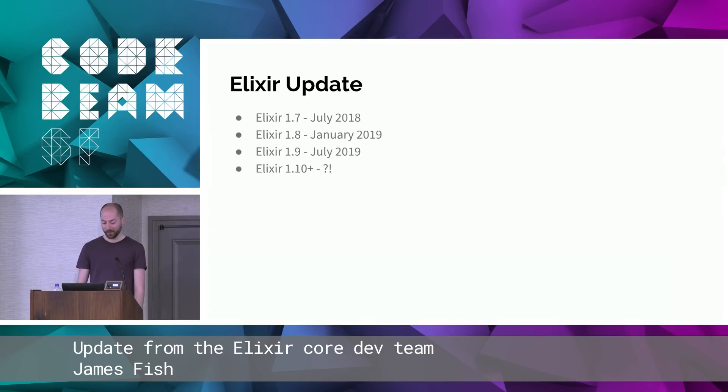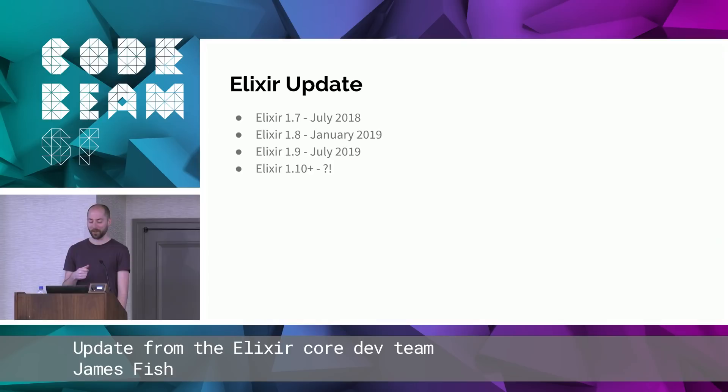Elixir gets a release every six months. We have semantic versioning, so there should be as much backwards compatibility as possible. Bug fixes at the language level can be feature changes for some people, and private APIs that you're not supposed to call can change. But apart from that, it should be backwards compatible, and every six months there's a new release.